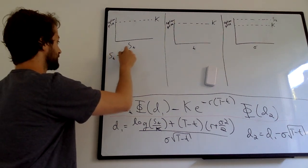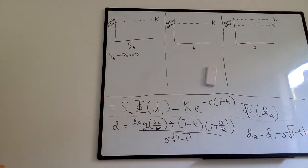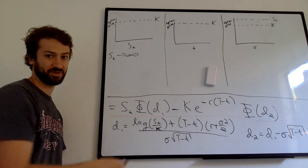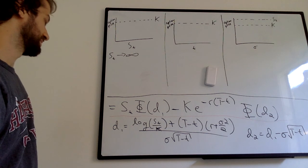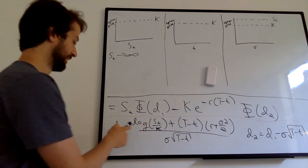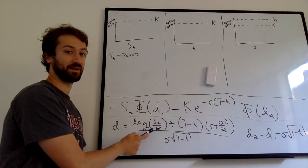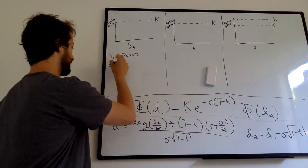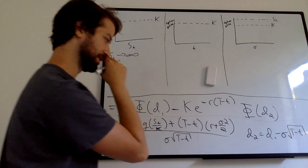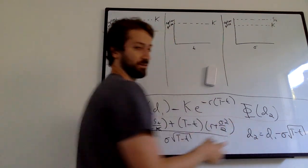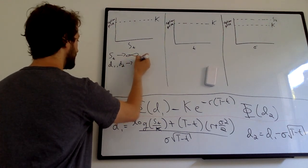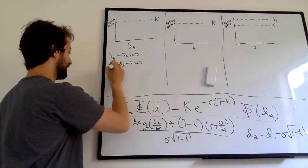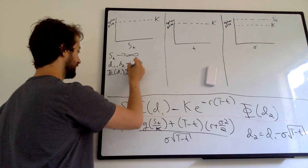Let's say that S sub T goes to infinity. As S sub T goes to infinity, this log of S sub T term is going to get very, very big — that's all that's going to change. So D1 is going to go to infinity. And D2 also, because D2 is basically D1 minus a term that is not changing if we're just changing S sub T. So both D1 and D2 are going to go to infinity, increasing with S sub T.